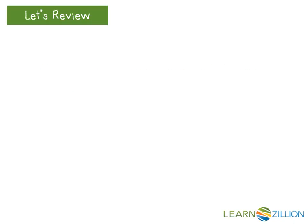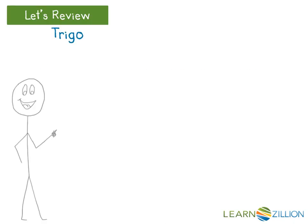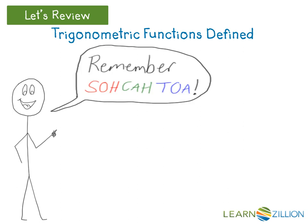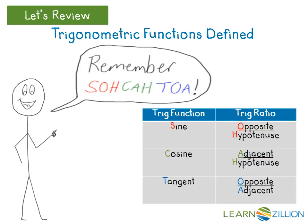Let's review. To remember the ratios of the side lengths that represent the value of each trig function, just remember the word SOH-CAH-TOA, where SOH represents the fact that the sine value of an angle can be found by dividing the opposite leg length by the length of the hypotenuse, CAH represents cosine as the adjacent leg divided by the hypotenuse, and TOA represents tangent as the opposite leg divided by the adjacent leg length.